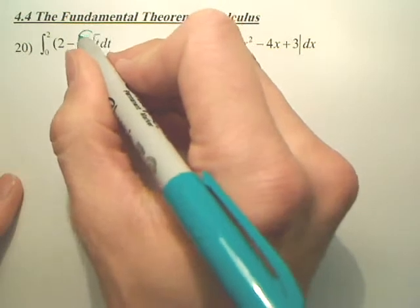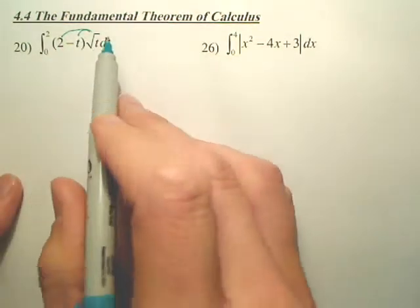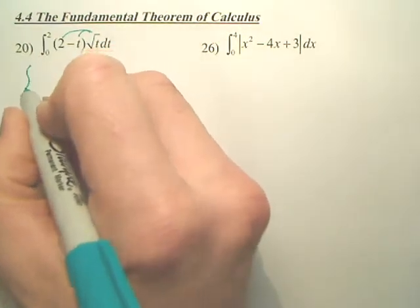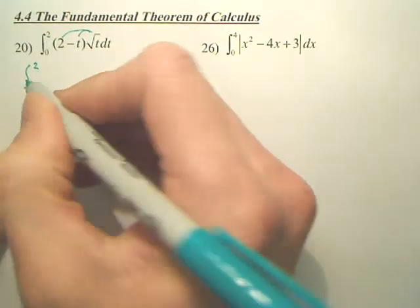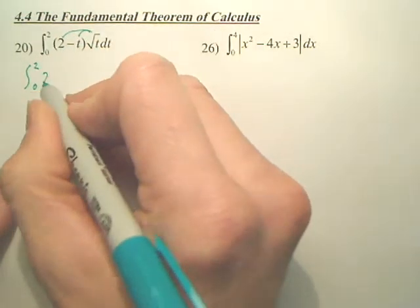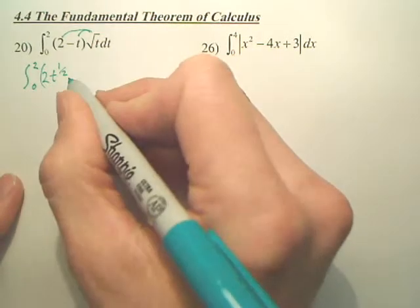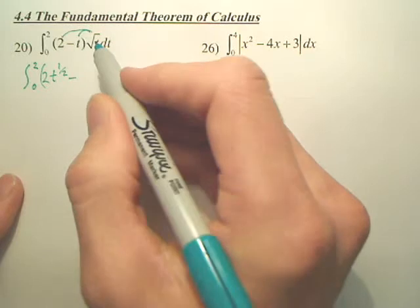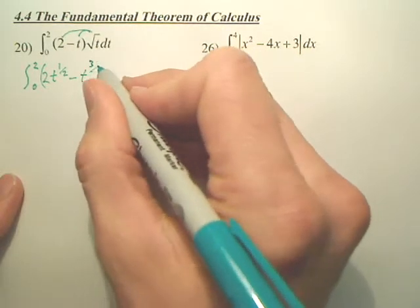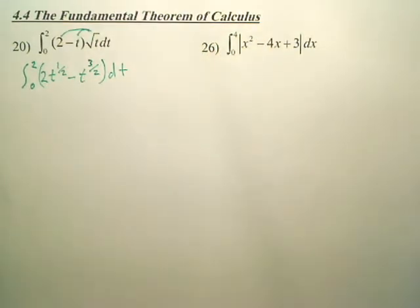The first thing we want to do is distribute this, because you have no formula to integrate this. Do you understand this is t to the one-half? That's zero to two. Two times that is 2t to the one-half, and t times t to the one-half is t to the three-halves.